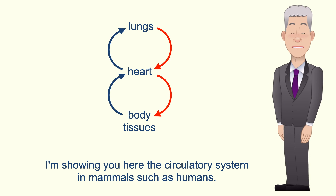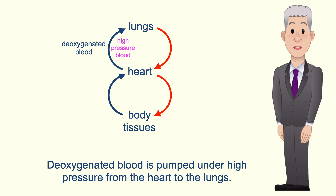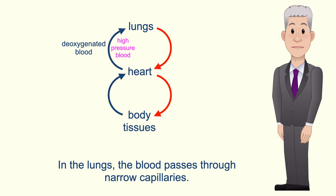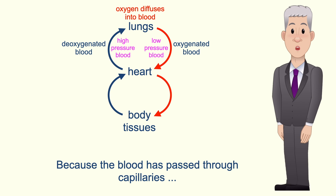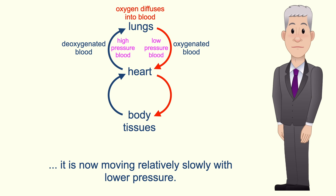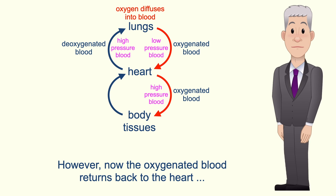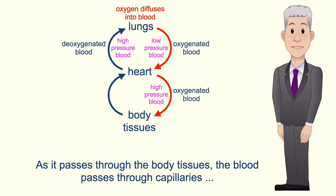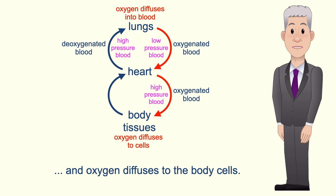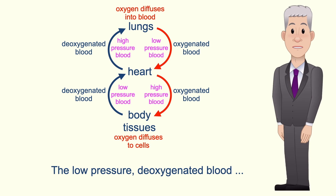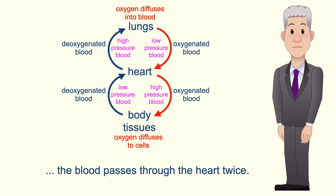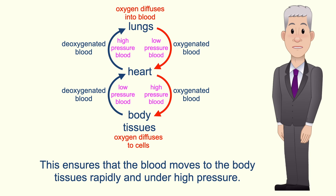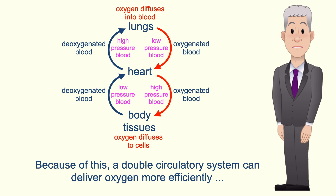I'm showing you here the circulatory system in mammals such as humans. Deoxygenated blood is pumped under high pressure from the heart to the lungs. In the lungs, the blood passes through narrow capillaries and oxygen diffuses from the air into the blood. Because the blood has passed through capillaries it's now moving relatively slowly with lower pressure. However, the oxygenated blood returns back to the heart, which pumps the blood at high pressure around the body. As it passes through the body tissues, the blood passes through capillaries and oxygen diffuses to the body cells. The low pressure deoxygenated blood then makes its way back to the heart to be pumped again. So in a double circulatory system the blood passes through the heart twice, ensuring that the blood moves to the body tissues rapidly and under high pressure. Because of this, a double circulatory system can deliver oxygen more efficiently than a single circulatory system.